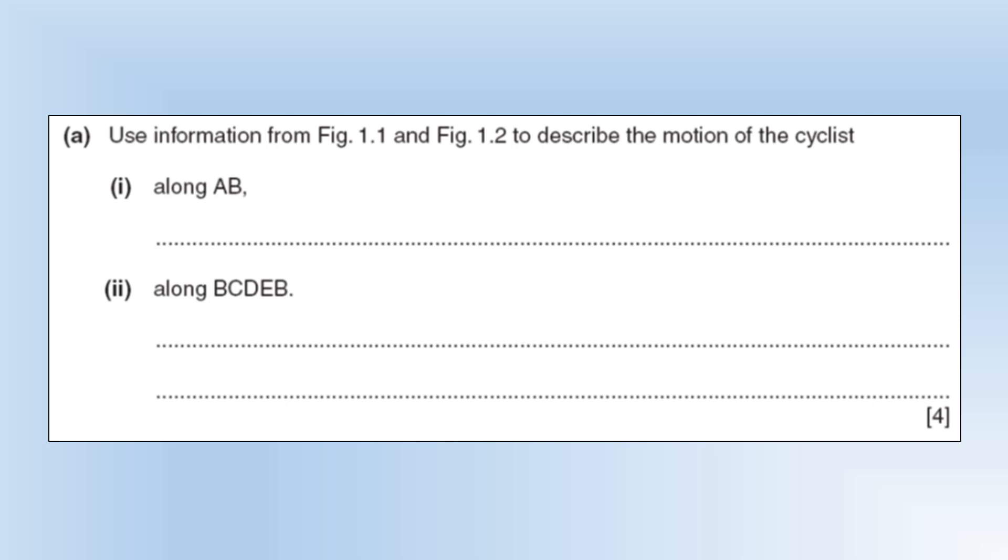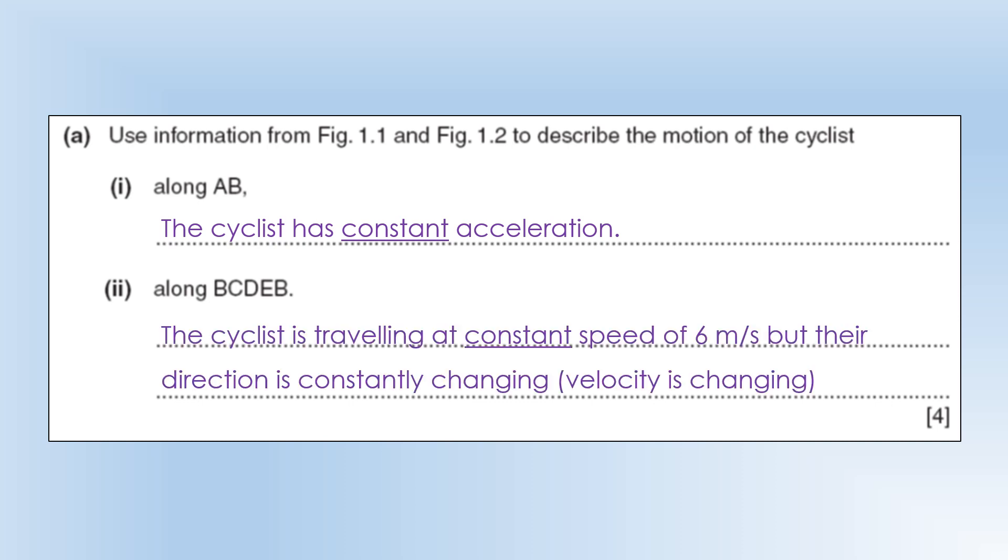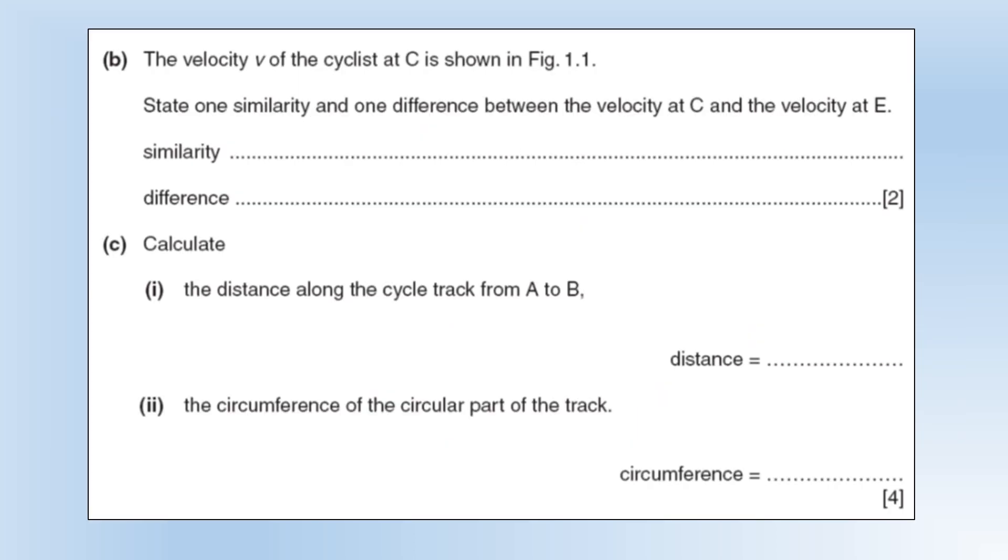Use information from the two diagrams to describe the motion of the cyclist along A, B. They have constant acceleration - it's a straight line speed versus time graph. And then B, C, D, E, B, the cyclist is driving at constant speed of 6 meters per second but their direction is constantly changing, so velocity is changing. The velocity of the cyclist at C is shown - state one similarity and one difference between the velocity at C and the velocity at E. They have the same magnitude, 6 meters per second, but they have completely opposite direction.